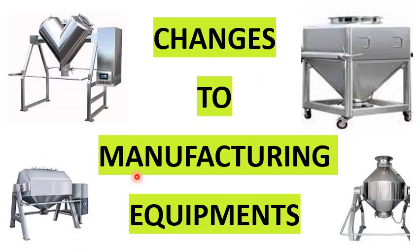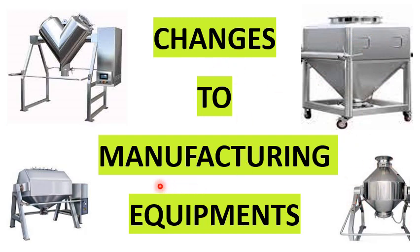Changes to the manufacturing equipment. Here I have shown a V-cone blender, an octagonal blender, a bean blender, and a double cone blender — examples of manufacturing equipment.